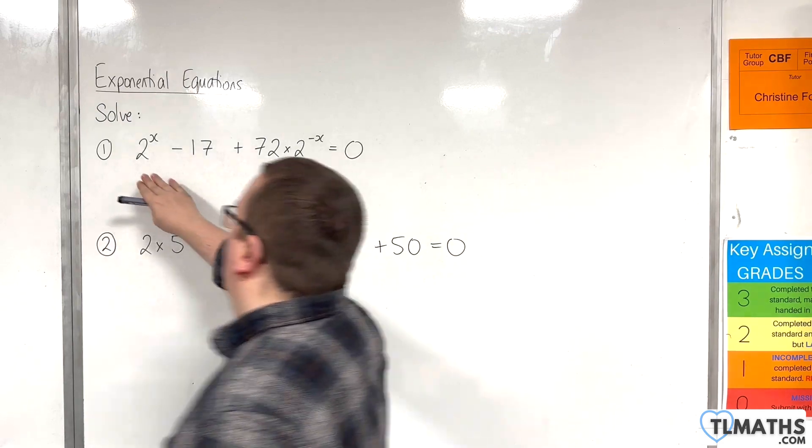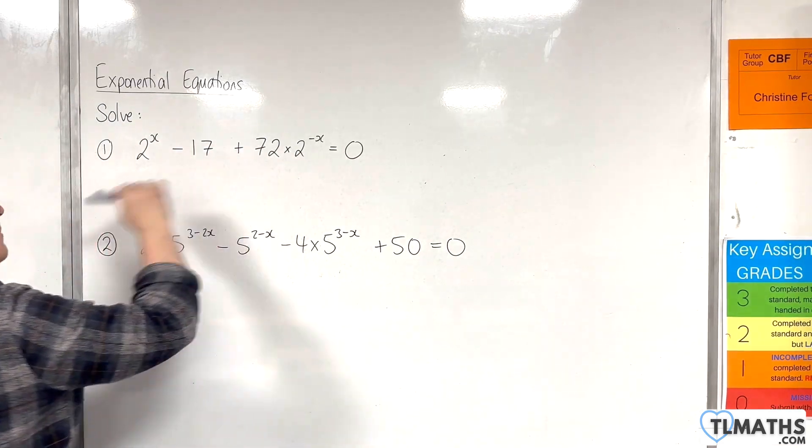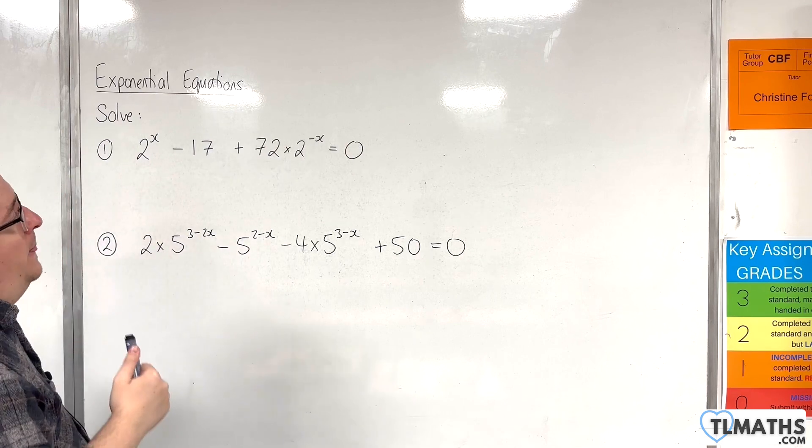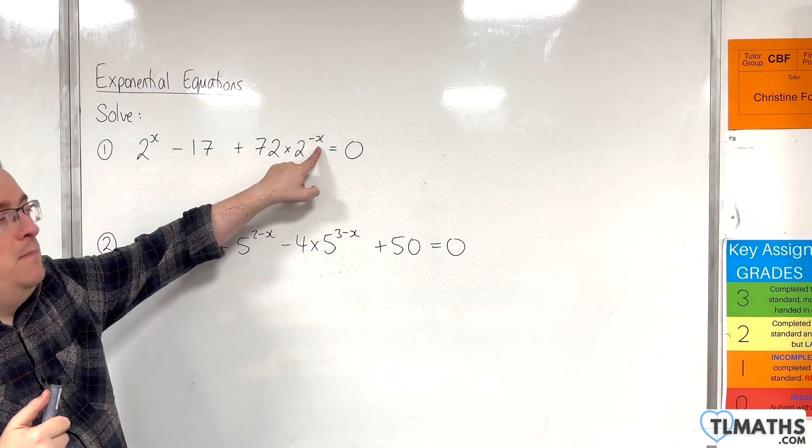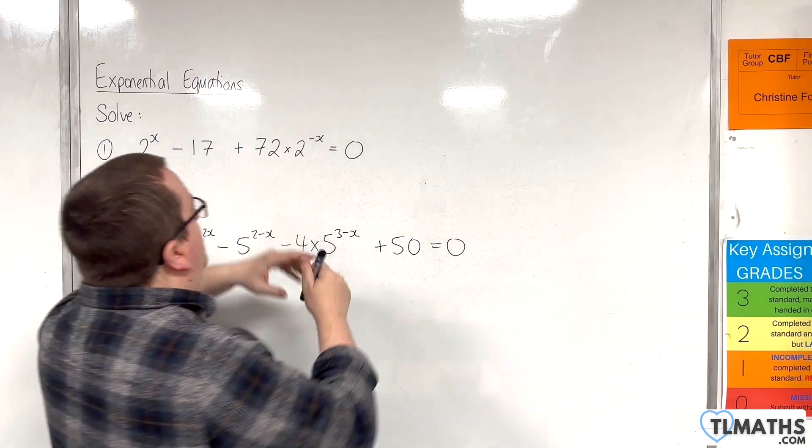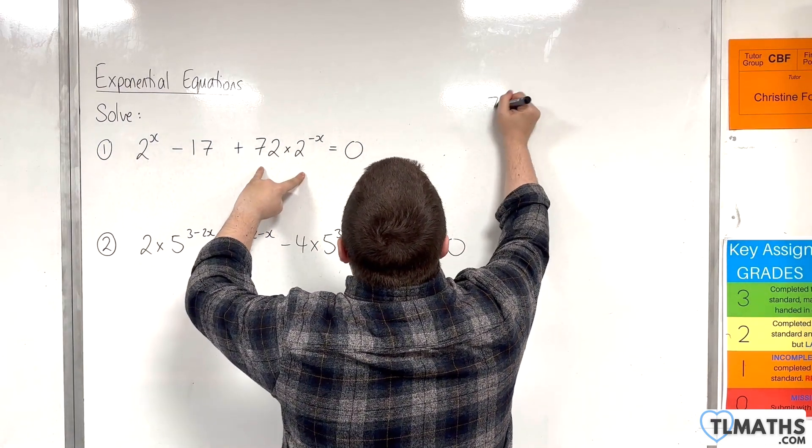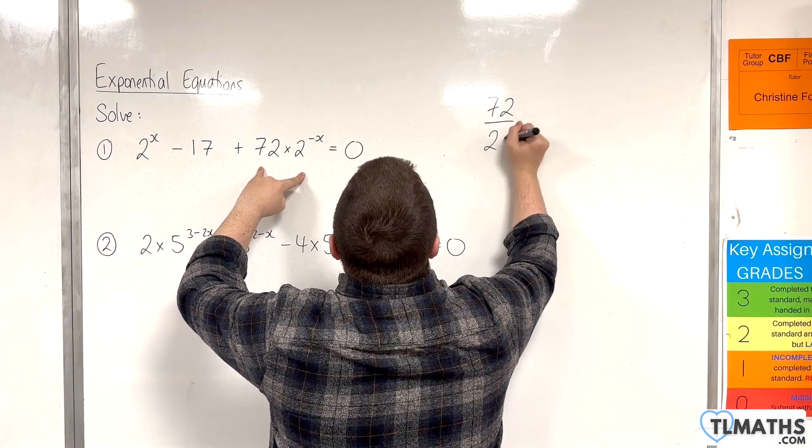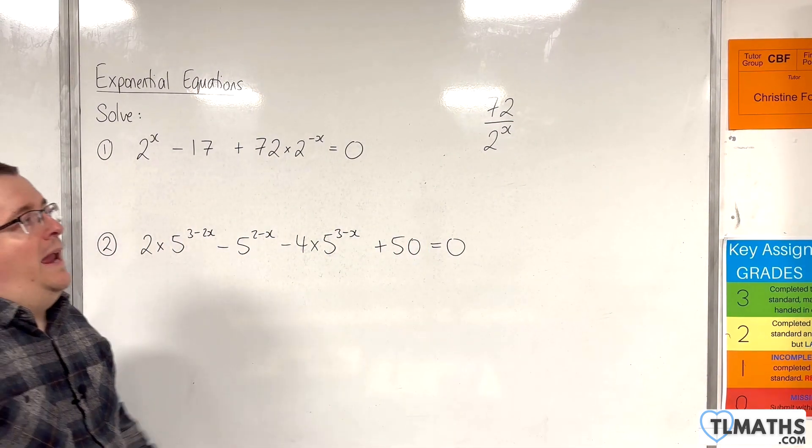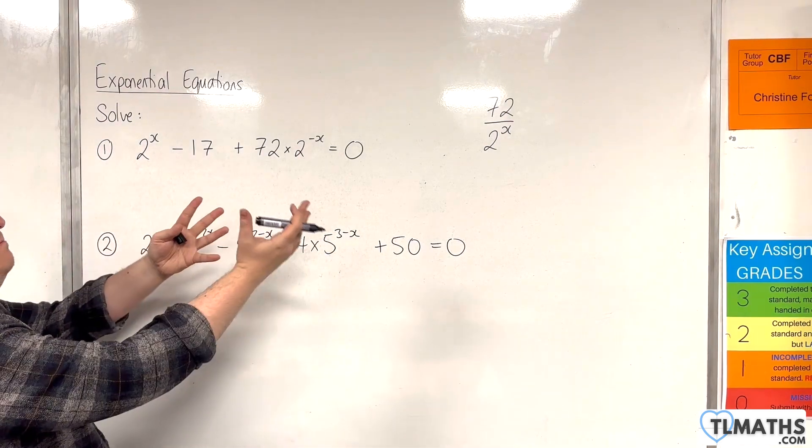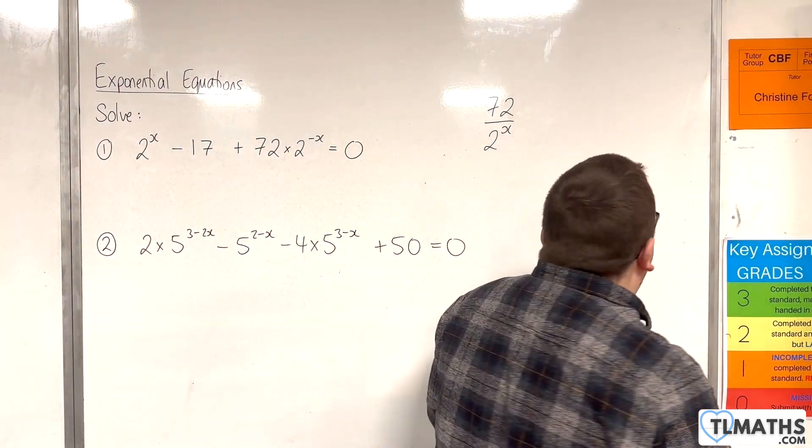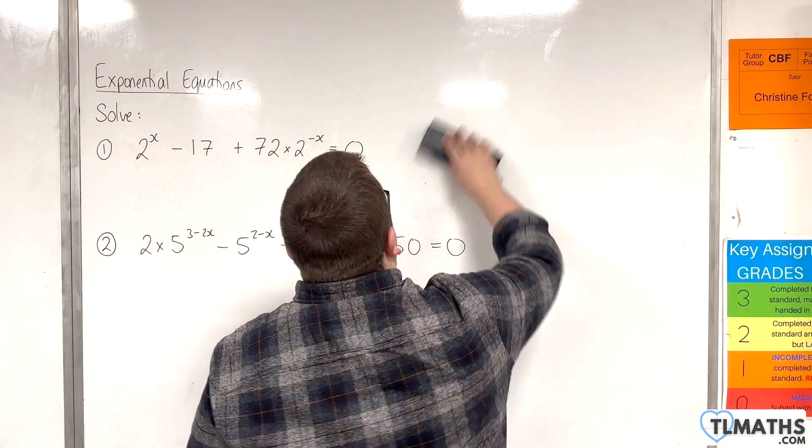But this first one, 2^x - 17 + 72·2^(-x), what you should focus your attention on is the fact that we have this 2^(-x) here. So, essentially, that term there is the same as writing 72 over 2^x. So, in order to get rid of the fraction, I would multiply everything through by 2^x. That seems like a good starting point.